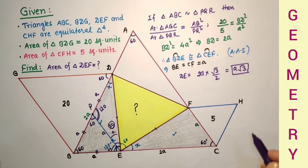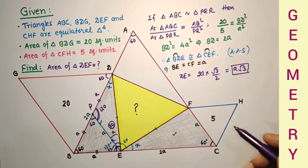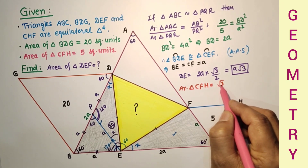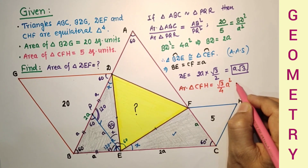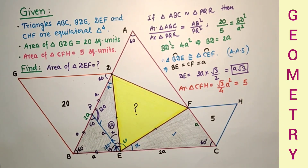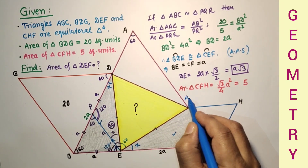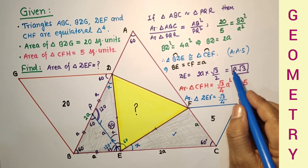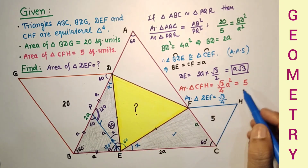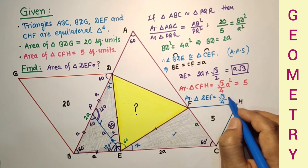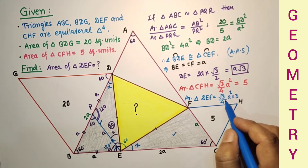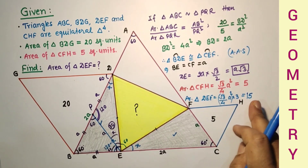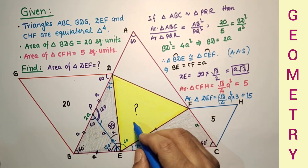Triangle DEF is equilateral with side A√3. Area of an equilateral triangle = (√3 / 4) × side². Area of CFH = (√3 / 4) × A² = 5. Therefore area of triangle DEF = (√3 / 4) × (A√3)² = (√3 / 4) × 3A² = 3 × 5 = 15 square units.